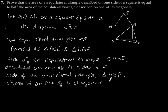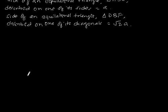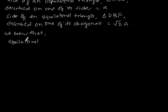Triangle DBF, described on one of the diagonals, has its side equal to root 2A. We know that equilateral triangle ABE has side equal to A.